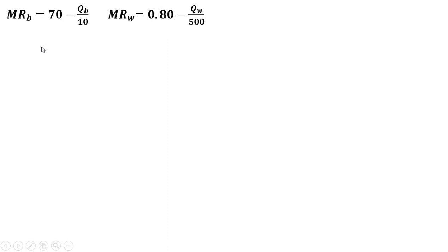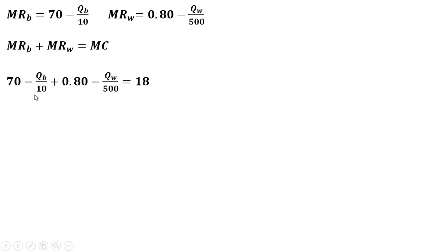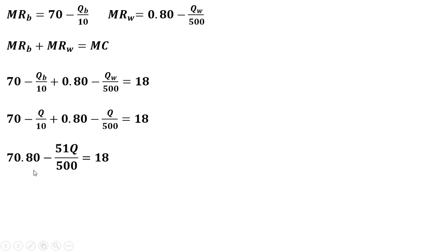We have our two marginal revenue equations for bats and wood chips. Remember, every time we produce a bat, a byproduct of production is one unit of wood chips. The next step is to add up these two marginal revenue equations and set that equal to marginal cost. So marginal revenue of baseball bats plus marginal revenue of wood chips equals marginal cost of $18. We set Q_B and Q_W equal to Q, since every bat produced yields one wood chip, and simplify. We get 70 plus 0.8, minus Q divided by 10 minus Q divided by 500, which simplifies to minus 51Q over 500, all equal to marginal cost of 18.